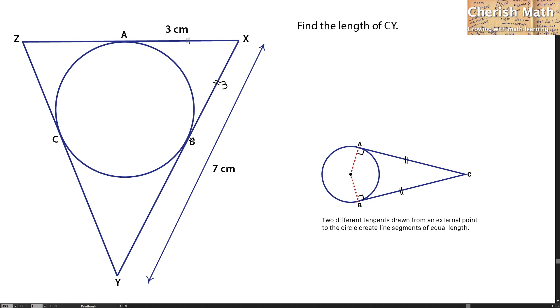Now, what about for the line BY? I got it by using 7cm minus 3cm. So, 7 minus 3, I'm getting 4cm for the line BY.